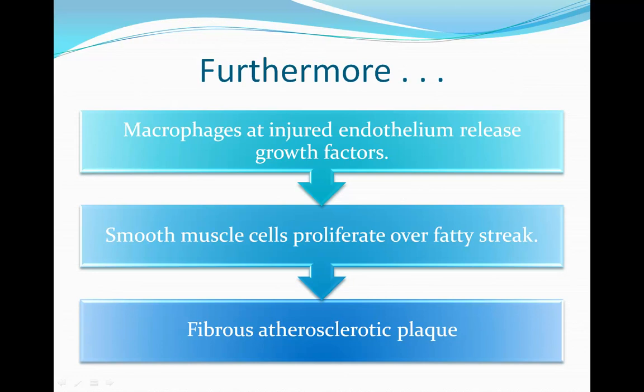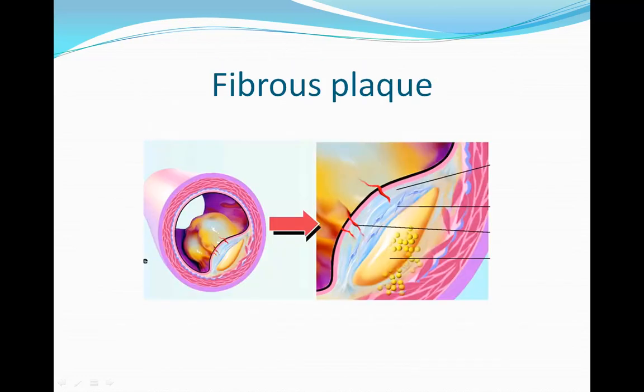Macrophages at the injured endothelium release growth factors. These growth factors cause smooth muscle cells to proliferate over the fatty streak, leading to fibrous plaque. Here we can see a picture of fibrous plaque. The smooth muscle that has proliferated over the fatty streak has caused it to build up into fibrous plaque. This plaque can calcify and block blood flow. These plaques become rigid very easily — it is like a scarring of the blood vessel.